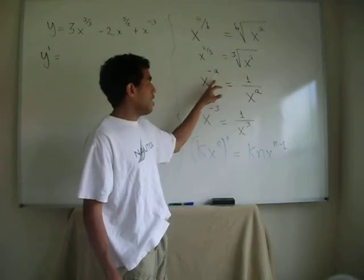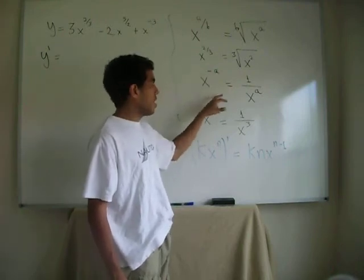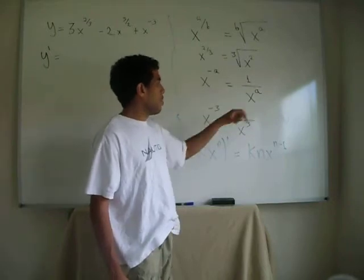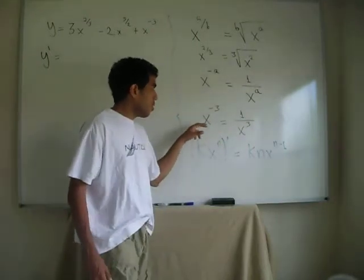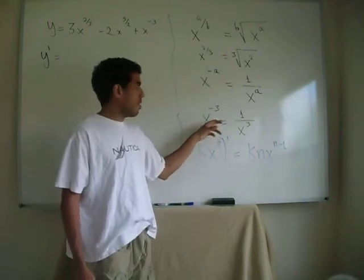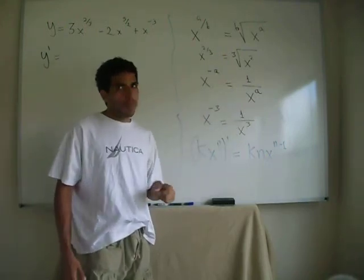When you have something that is value to a negative exponent, all you're saying is that you have the inverse of a variable value to a. So in this case, when we have x power to minus three, all we're saying is that we have one over x cubed. That's it.